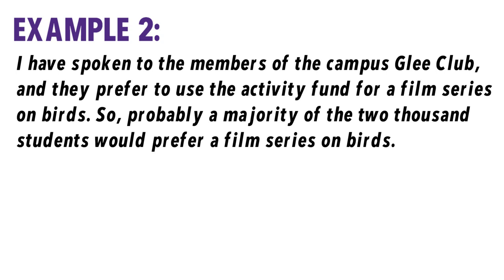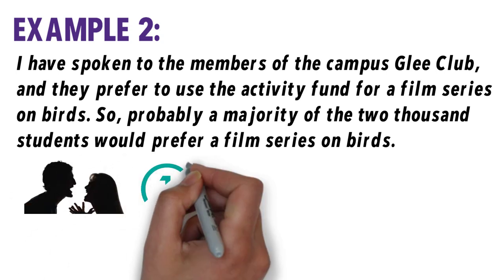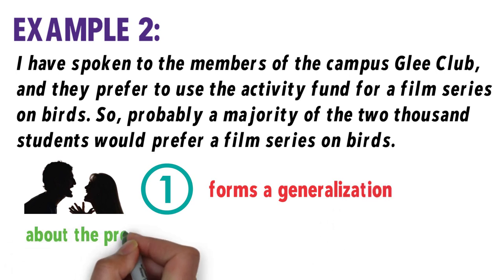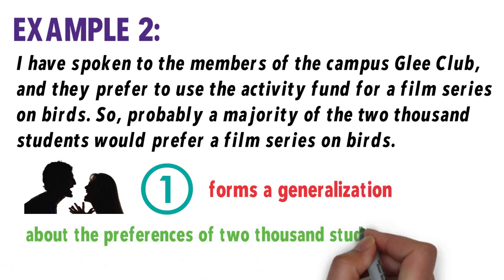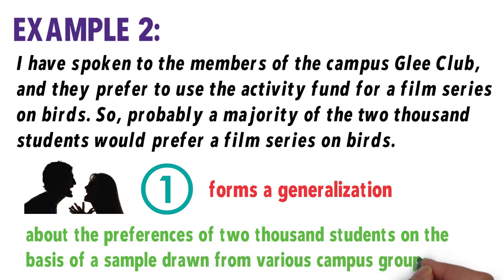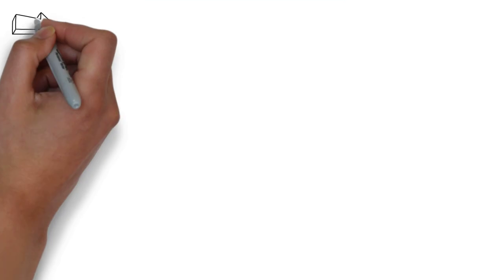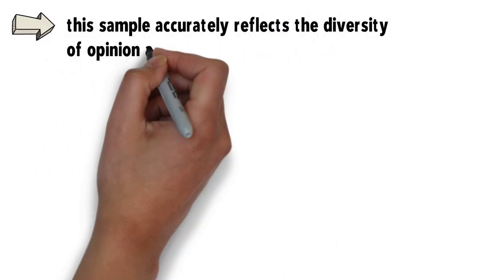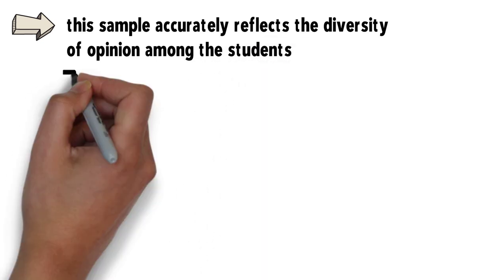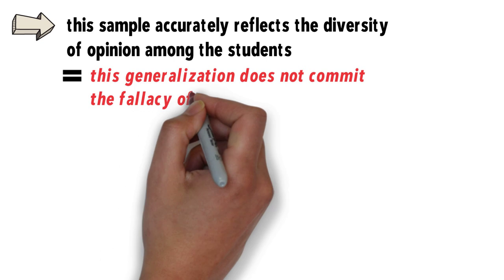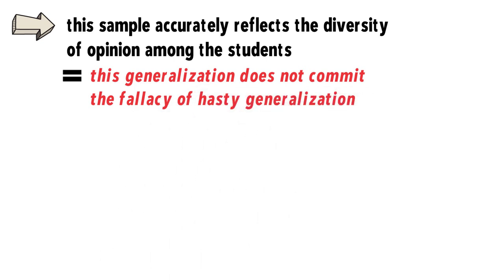As we can see, the arguer in the first example forms a generalization about the preferences of 2,000 students on the basis of a sample drawn from various campus groups. It is therefore reasonable to assume that this sample accurately reflects the diversity of opinion among the students. Thus, this generalization does not commit the fallacy of hasty generalization.